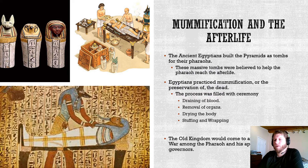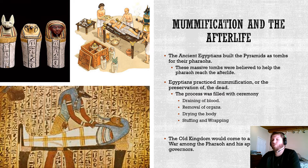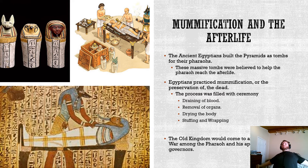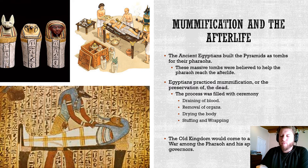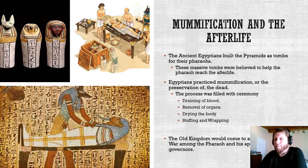The Old Kingdom lasts the better part of 500-plus years but ends due to civil war. The pharaoh had delegated enough of his rule to regional governors that those governors felt they had the right to make more decisions and fought back against the pharaoh. This enters what we know as the First Intermediate Period, where the pharaoh eventually has to reassert power.